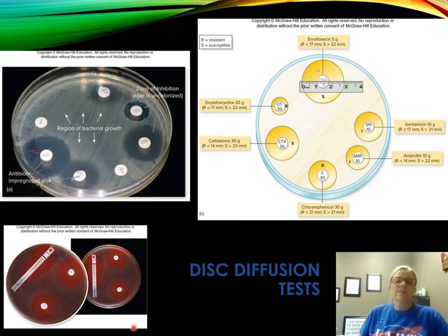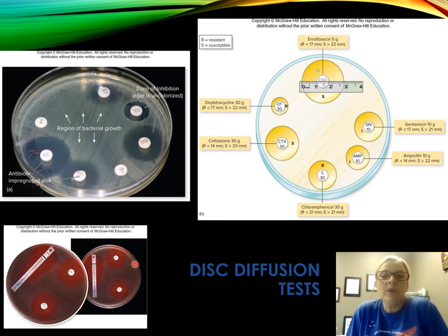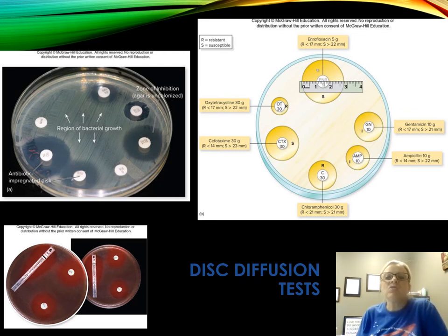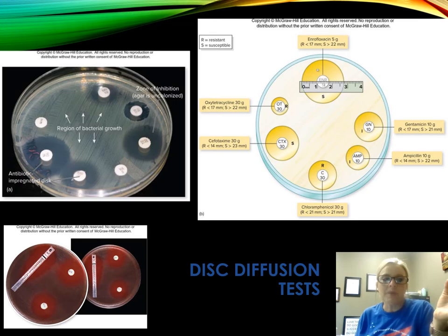Another type is the E-test, a diffusion test using a strip rather than a disc to produce the zone of inhibition. The advantage of the E-test is that the strip contains a gradient of a drug calibrated in micrograms, so you can measure by observing the mark on the strip that corresponds to the edge of the zone of inhibition. It's less common, but it is an alternative.